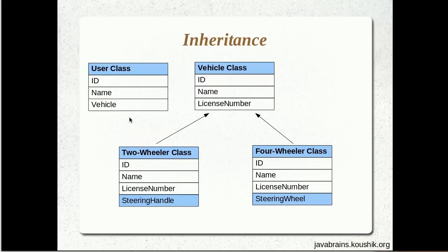This is where it gets tricky. I have a base class referenced in my user object and I want to save the relationship dynamically, using the feature of polymorphism. I cannot do that if I treat these as two separate entities. I need to tell Hibernate that this is an inheritance happening here and we need to map this differently.